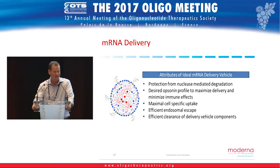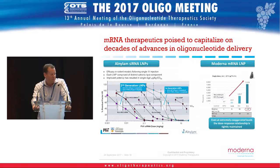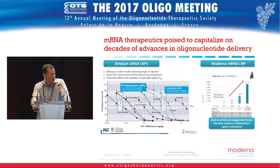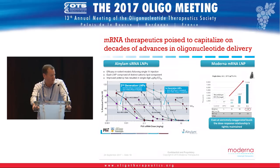Messenger RNA therapeutics arrived at a time when we could take advantage of decades of work on delivery for other nucleic acid cargo. Alnylam's optimization of lipid nanoparticle technologies for siRNA delivery — going from early first-generation LNPs to second-generation MC3, used for patisiran — represented orders of magnitude improvements in delivery efficiency. When we began looking at mRNA delivery using LNPs, we could jump in at a point where the technology was already relatively advanced.